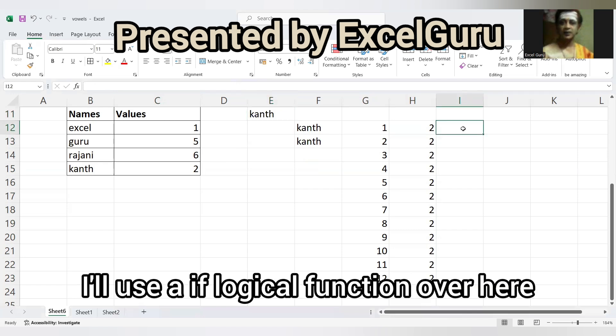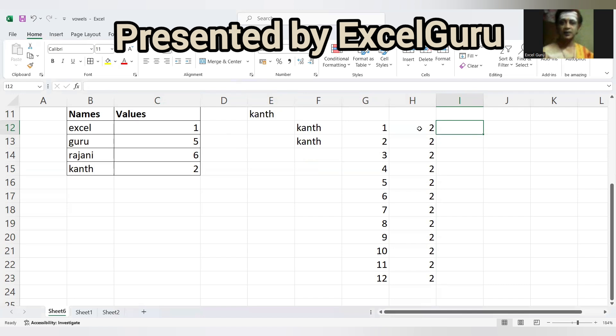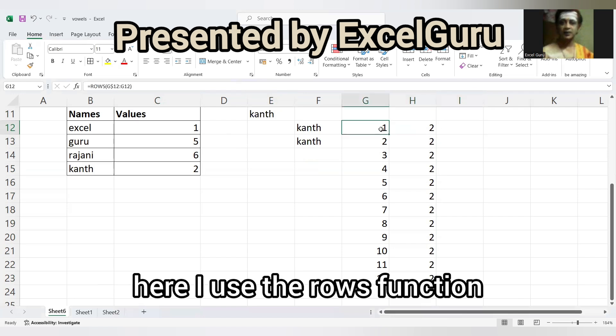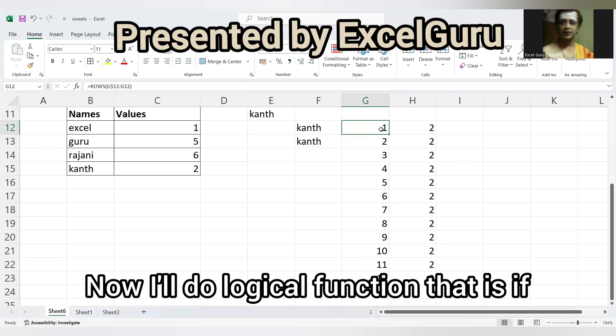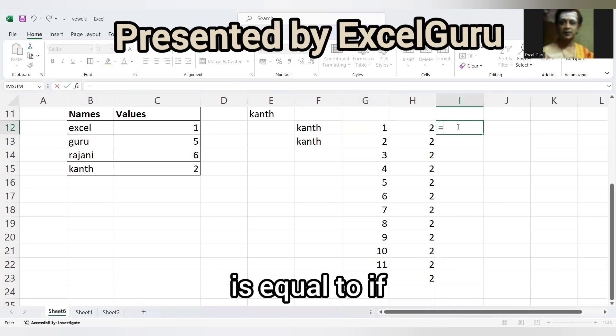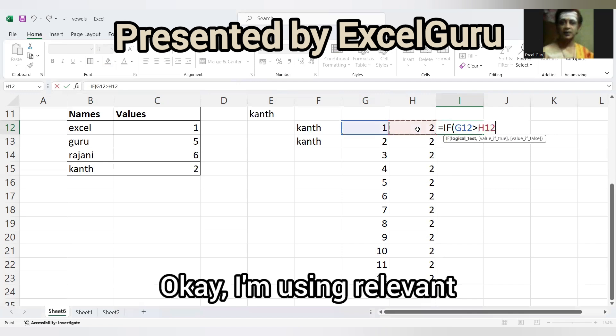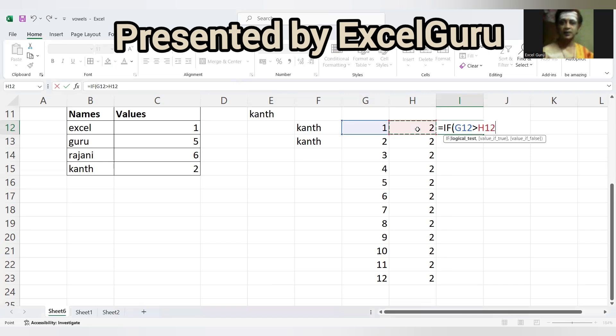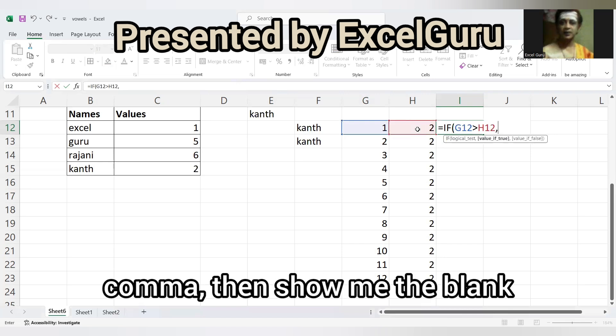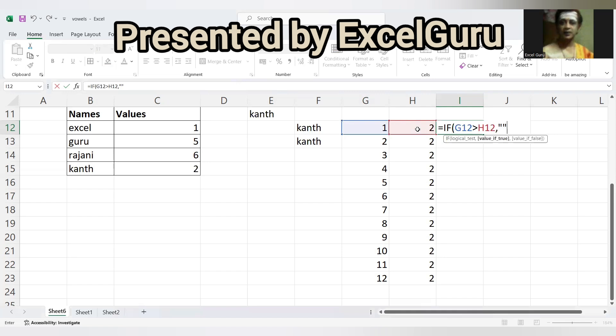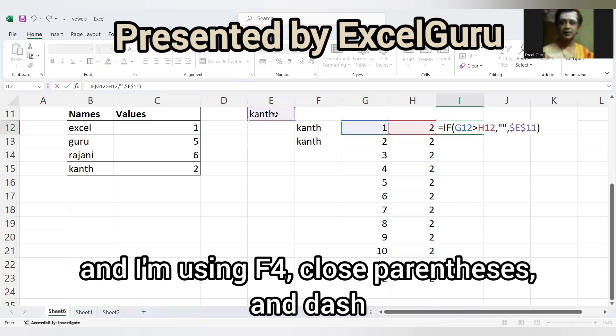Here two. So what I'll do, I'll use the IF logical function over here. Here I have used the VLOOKUP, here I'll use the ROWS function. Now I'll do logical function - if this is greater than this, I'm using relevant reference, then show me the blank, else I'll show this name and I'll use F4. Close parenthesis, enter.